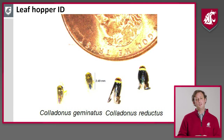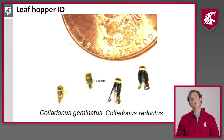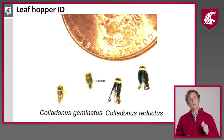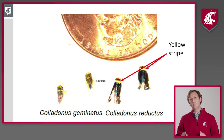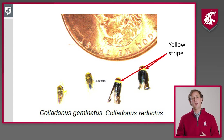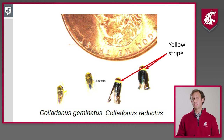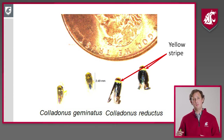Colladonus geminatus and Colladonus reductus are fairly small — about two and a half millimeters long and about a millimeter wide. Colladonus reductus is shown here with a yellow stripe, which is really indicative of this species. Colladonus montanus also has it — a yellow patch on the back. Sometimes reductus has a yellow patch too, but it's very small.